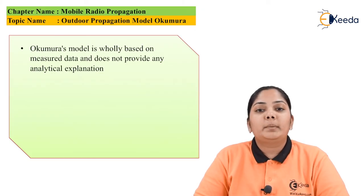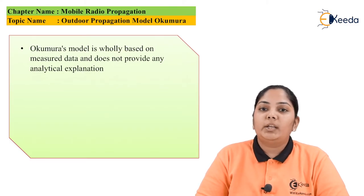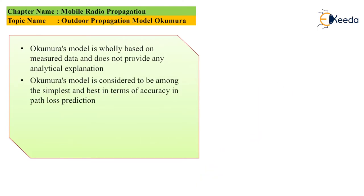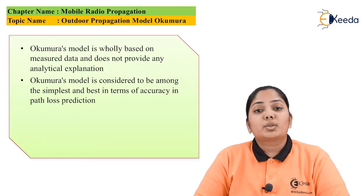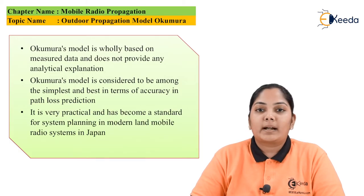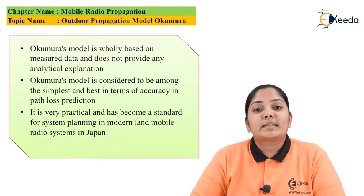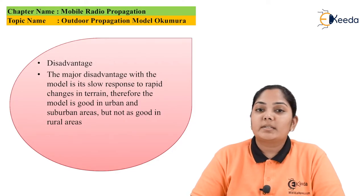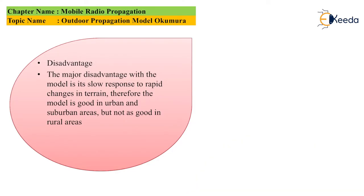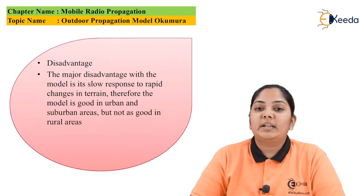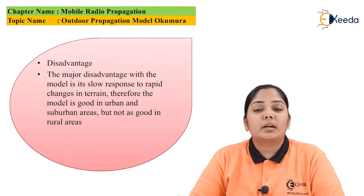The Okumura model is completely based on measured data — it is not a predefined analytical equation. It is considered the simplest and best model in terms of accuracy for path loss prediction, and has become a standard for system planning of land mobile communication in Japan. However, its major disadvantage is the slow response to rapidly changing terrain, so it is not suited for rural areas but is well suited for suburban and urban areas.